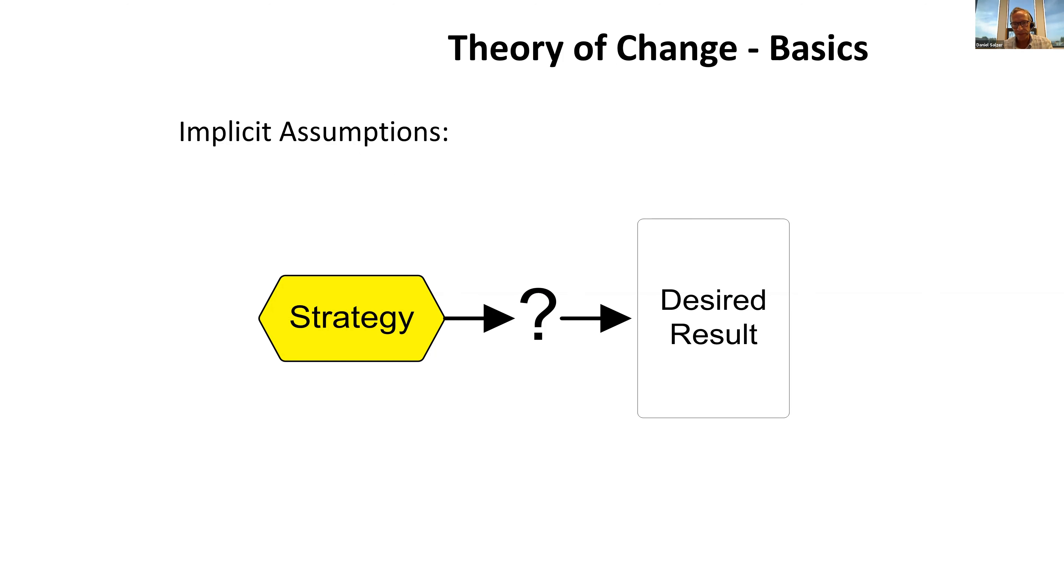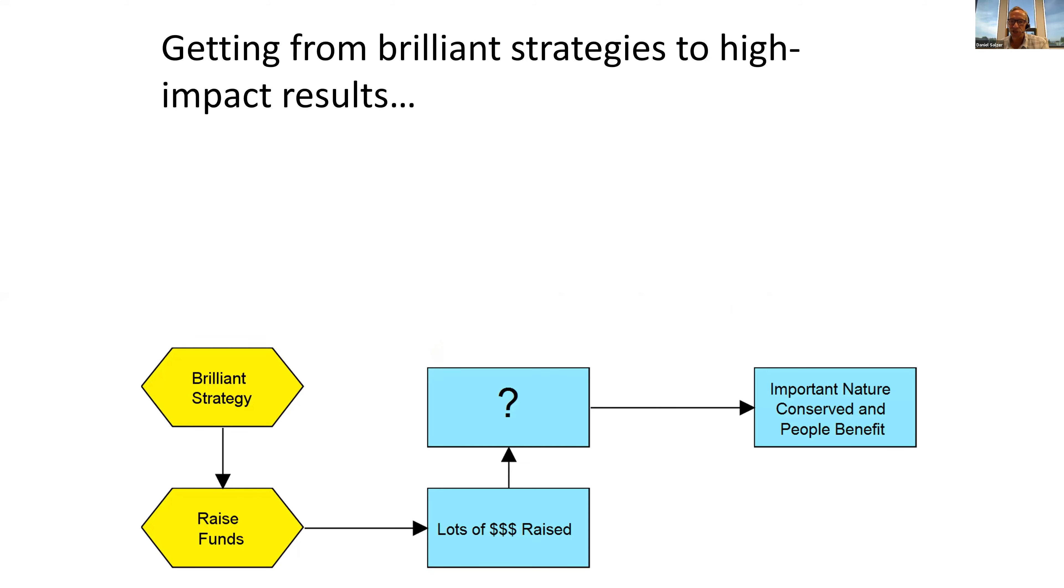In general terms, a theory of change is a description of how our resources, strategies, and activities at any scale are expected to produce the results we're aspiring to achieve. There's always an underlying logic in the mind of the implementer. They're taking action to achieve some result.